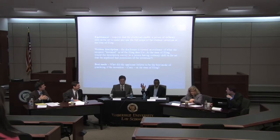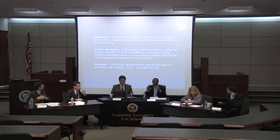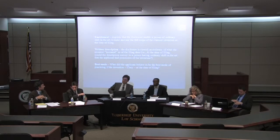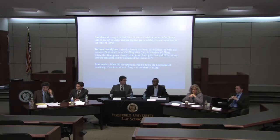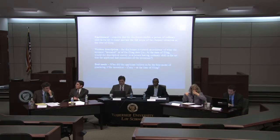Briefly, enablement requires that the disclosure enable a person of ordinary skill in the art to make and use the full scope of the claimed invention at the time of filing. The written description requirement views the disclosure as evidence of what the inventor invented as of the filing date — the question being whether the description would convey to a person having ordinary skill in the art that the applicant had possession of the invention. And finally, the best mode requirement asks what the applicant believed to be the best mode of practicing the invention, if any, at the time of filing.